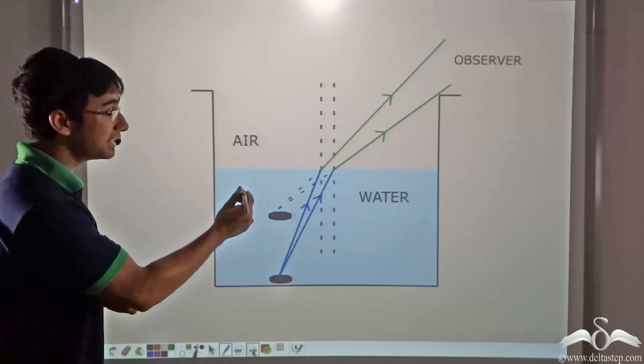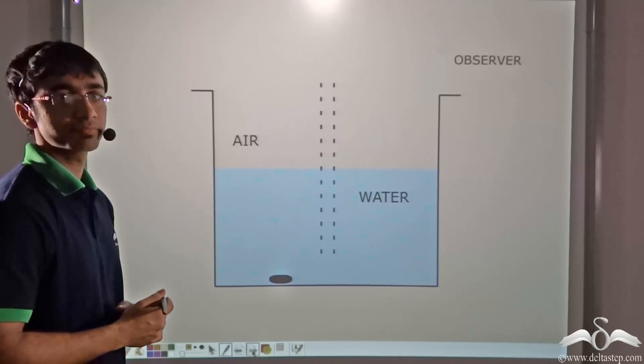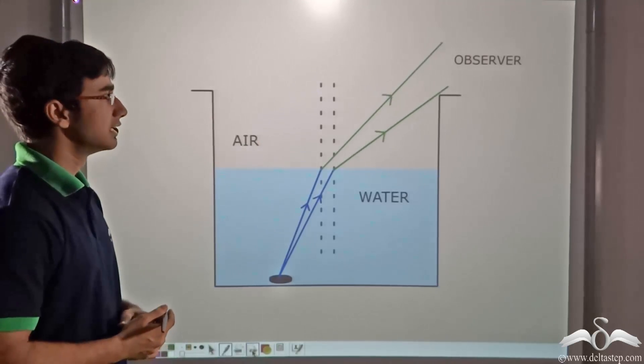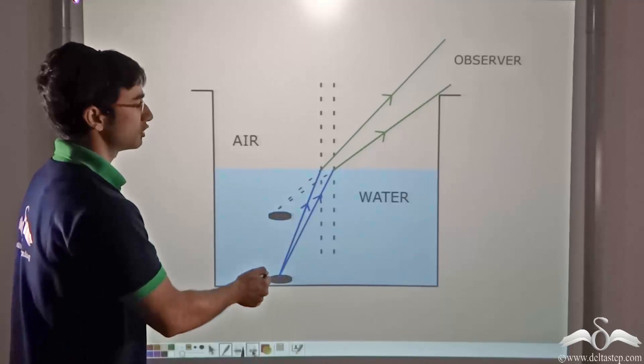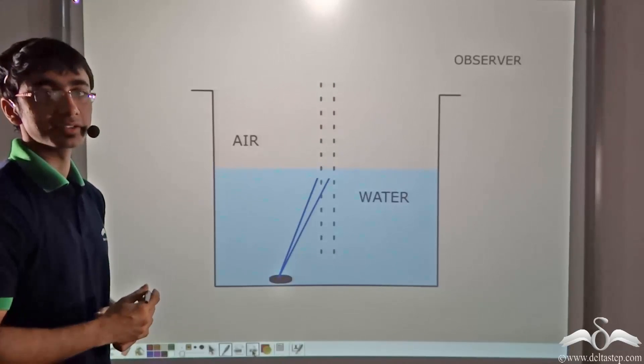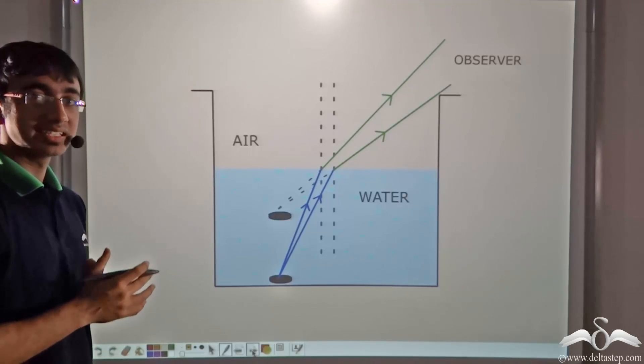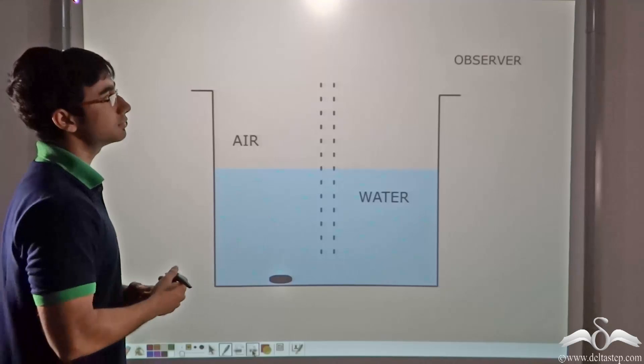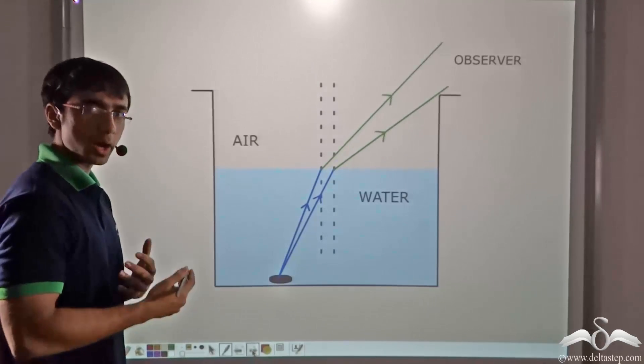These bent rays of light are then incident on the observer's eyes. Now to an observer who is seeing this from air, he is not going to be able to observe this bent path of light, this zigzag path that the light rays are taking. So the observer always has the tendency to see things in a straight line. So that is why the observer will see the light coming from a straight path.